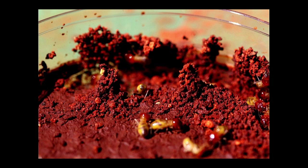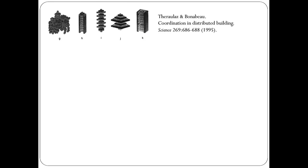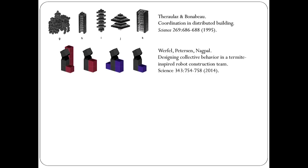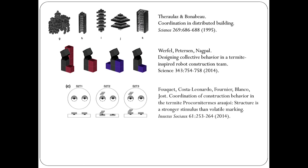This goes back to some earlier studies that really influenced me when I came to this area. The building agents in that system look at local configurations of material and decide where to add more based on where material has already been placed. That's the reason we took that approach in the Termi system — the robots look at local configurations of material to decide where to add more, using physical configurations rather than chemical traces.